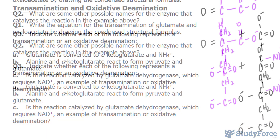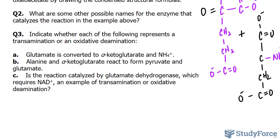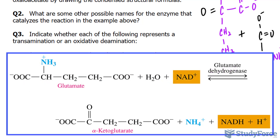In question number three, indicate whether each of the following represents a transamination or an oxidative deamination. The first one: glutamate is converted to alpha-ketoglutarate plus NH4+, which is ammonium. Oxidative deamination occurs when the NH3+ group in glutamate is removed as an ammonium ion, NH4+. So the first one is oxidative deamination, and in the process alpha-ketoglutarate is produced.